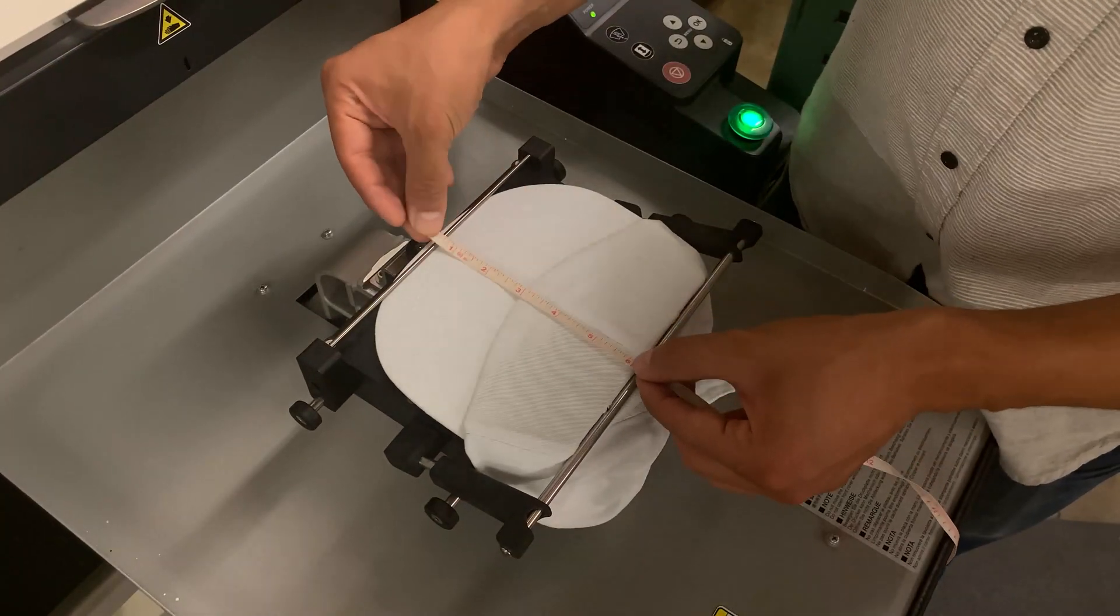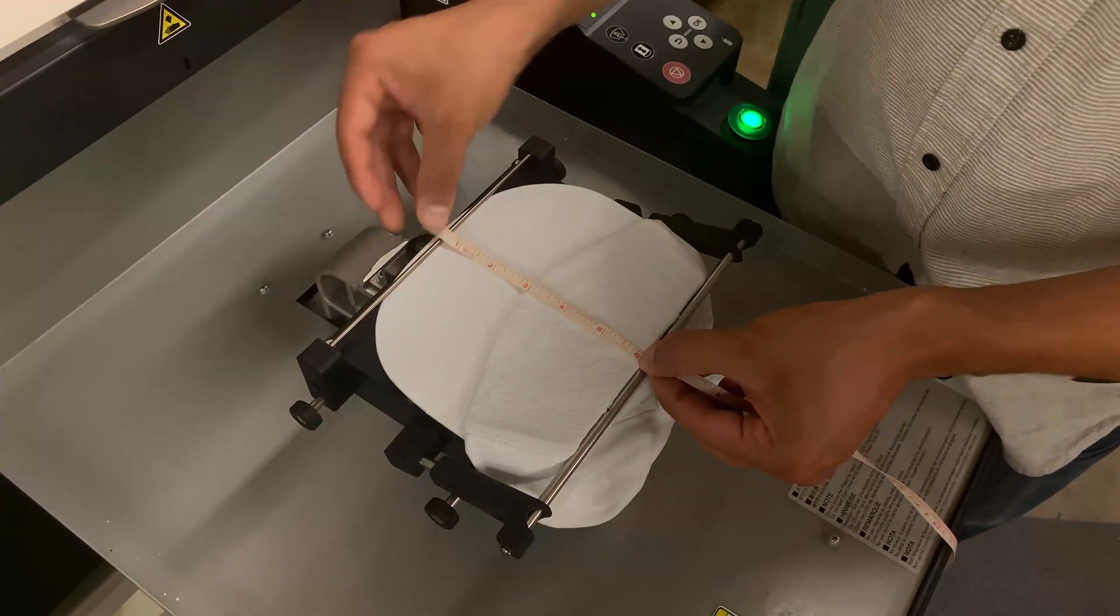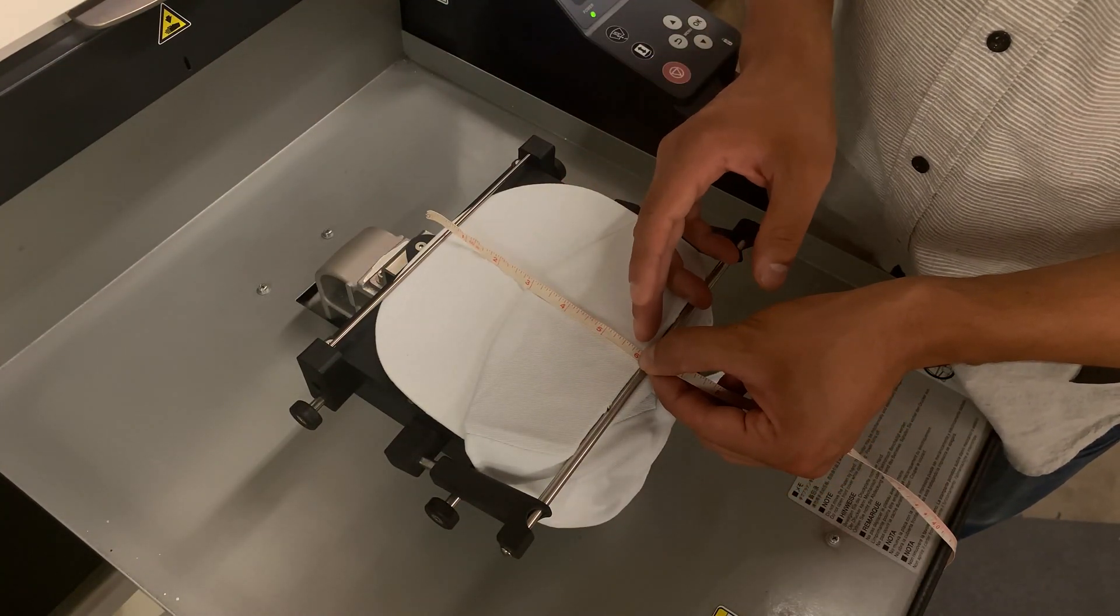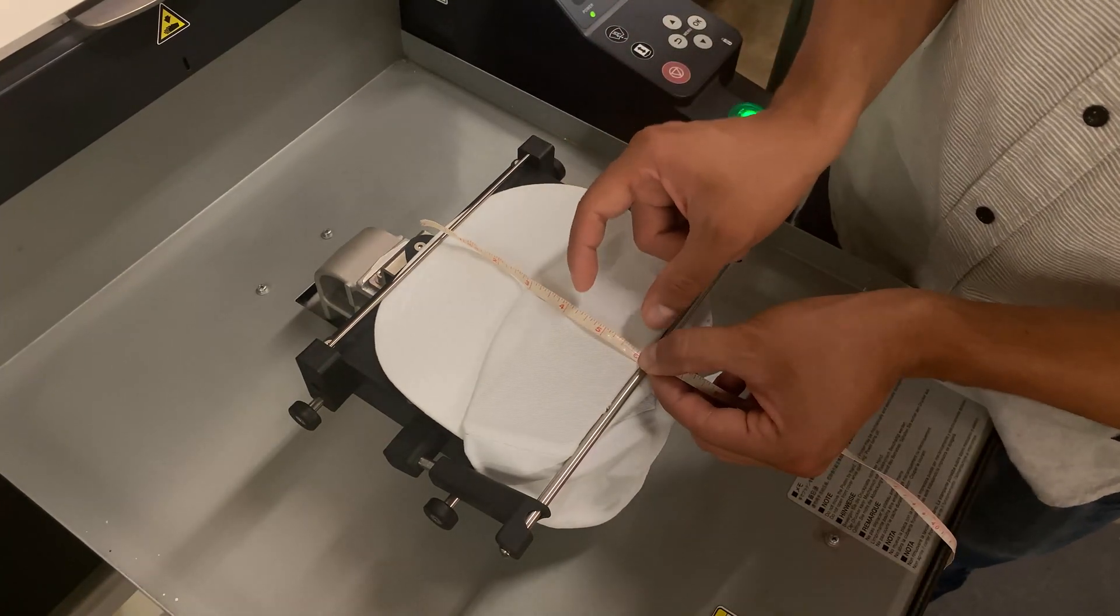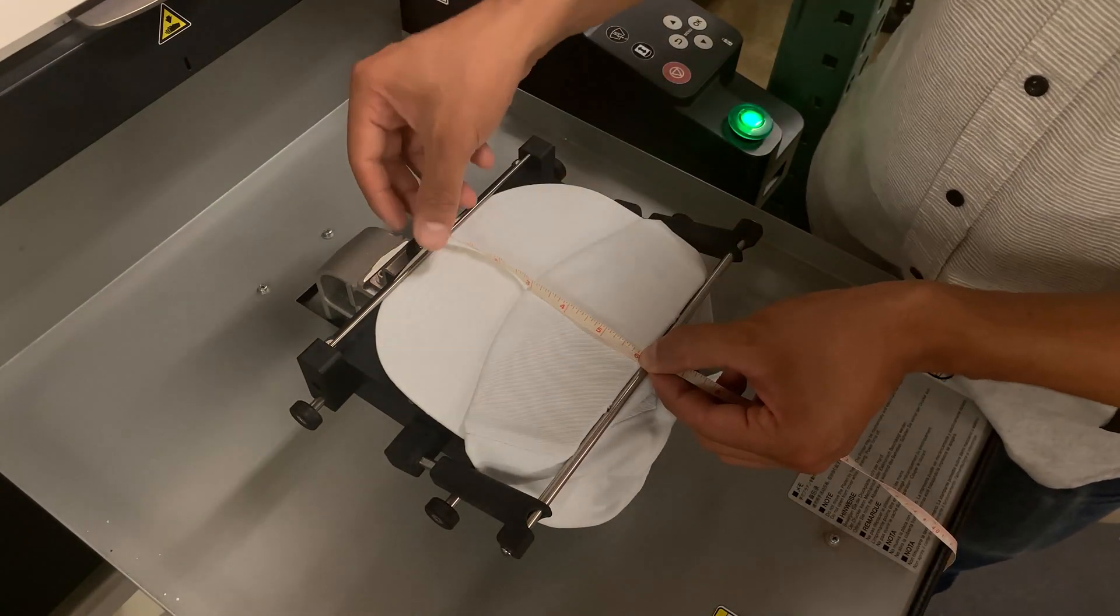Now that we're on the machine, we already know exactly where the artwork is going to print. It's going to be between four to six inches from the bottom, we also know that the height is a little bit less than two inches and it has a corresponding width.